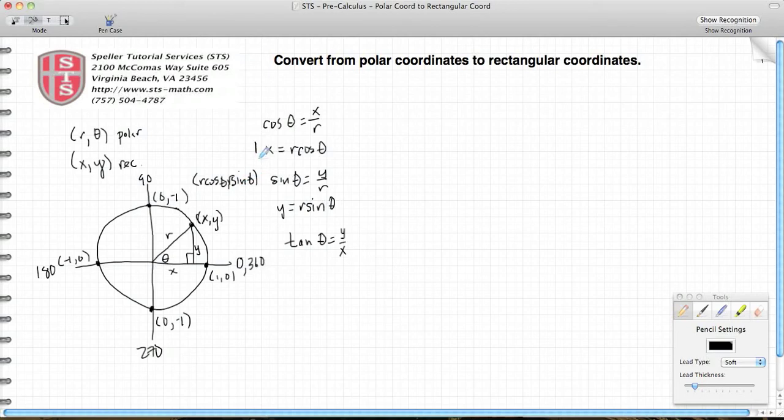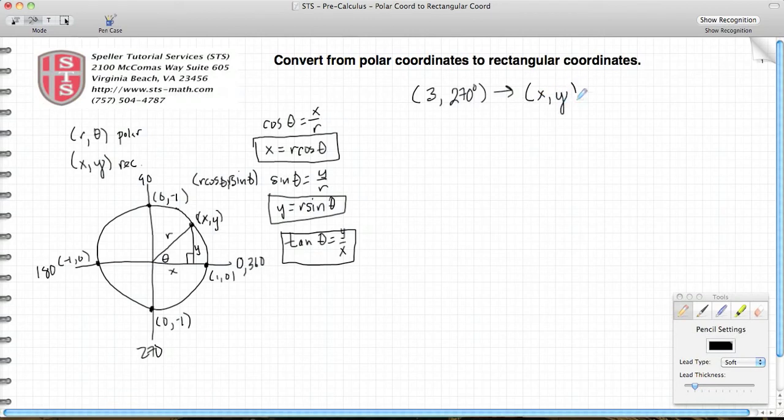We see that this point (x, y) in rectangular form can also be expressed as (r cos θ, r sin θ). We're going to use these equations to help us look at a real live example and figure out how to convert from polar to rectangular. Let's say we start off with a polar coordinate of (3, 270°) and we want to convert that into rectangular form.